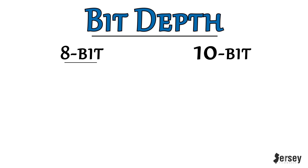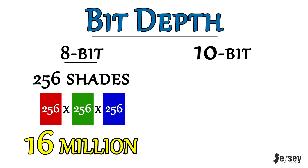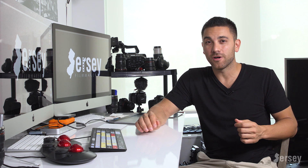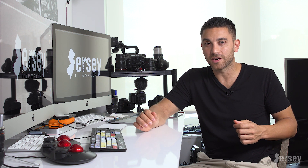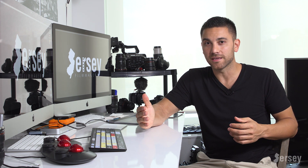An 8-bit color depth contains 256 shades of each channel — red, green, and blue. There's a reason it's 256, which I'm not going to get into. Just know that it's 256 shades. If you multiply each channel containing 256 shades, you come up with about 16 million colors. 16 million colors sounds like an awful lot, but even the most minute change creates a new color on the color spectrum. So in the grand scheme of things, 16 million really isn't that much, and you'll see in a second.